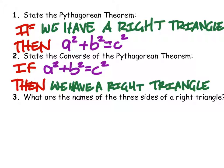What are the names of three sides of a right triangle? So if this is a right triangle, right, the two sides that make up the right angle are called legs.